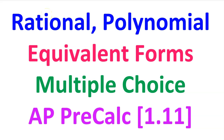In this video, we will do some College Board multiple choice questions about equivalent forms of rational and polynomial functions. This is AP Precalculus topic 1.11.